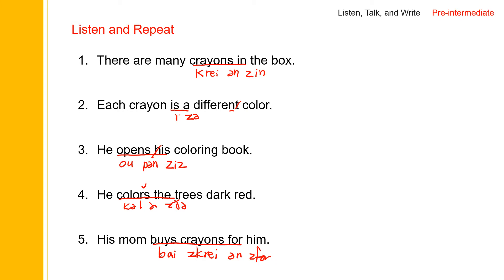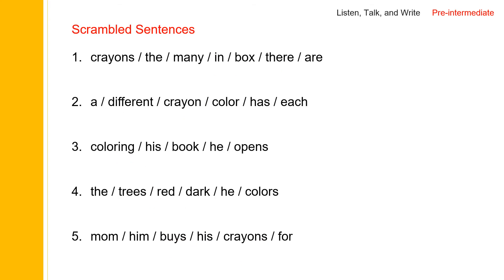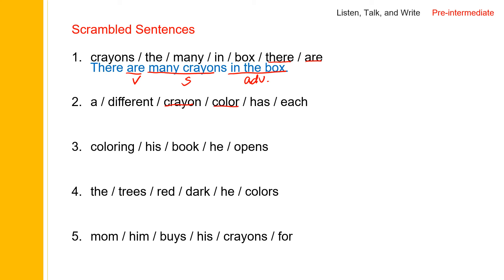Now let us scramble the sentences. We use 'there' first — 'there are' — verb, and then the subject is plural: many crayons. There are many crayons in the box. Many crayons is the subject, 'are' is the verb, 'in the box' is an adverbial phrase. Each crayon is the subject, 'is' is the verb, 'a different color' is a complement.